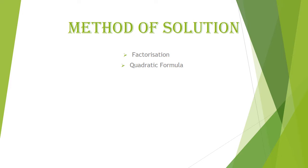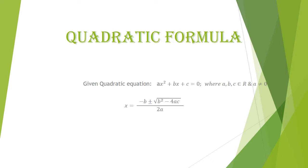The second method is the quadratic formula. For the equation ax² + bx + c = 0, x will be equal to minus b plus or minus the square root of b² minus 4ac, upon 2a. This formula is known as the quadratic formula.